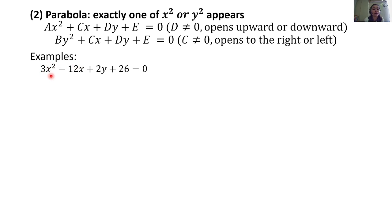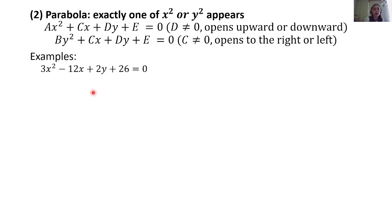First example: 3x squared minus 12x plus 2y plus 26 is equal to 0. Here only the term with x squared is present, and D equals 2 which is not equal to 0. So it falls under the first condition — a parabola opening either upward or downward. To identify the opening direction, we find the standard form.